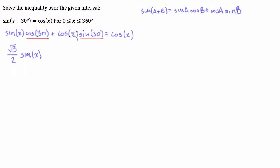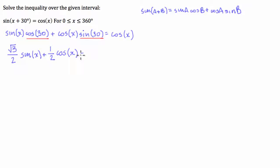Then we add to that: sine of 30, which is just one half, multiplied by cosine of x. And that whole expression is equal to cosine of x.